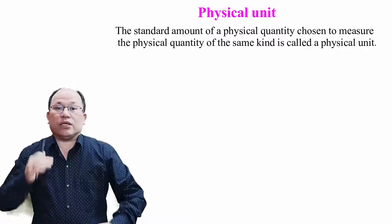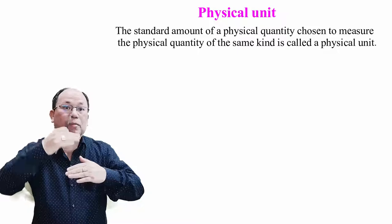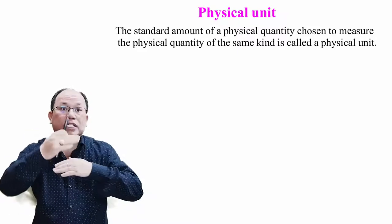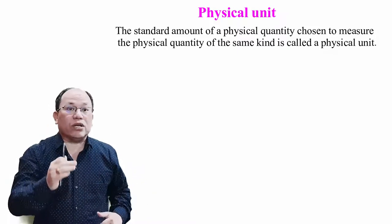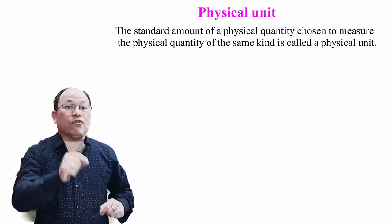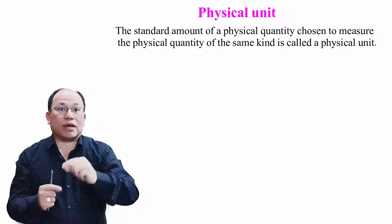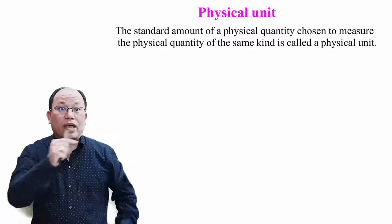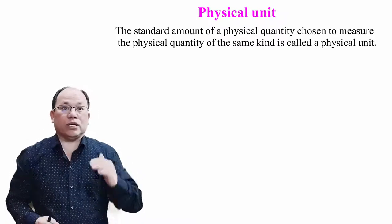That means we have to compare the known one and the unknown one. We have to compare the physical unit. For example, length of a rod is equal to 5 meters. That means length of the rod is unknown and meter is the physical unit.